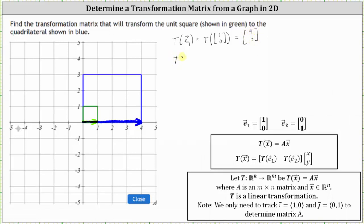Now let's find the transformation of the vector E sub two, which is the transformation of the vector (0, 1). Notice the vector (0, 1) forms the side of the unit square along the y-axis. The transformation of this vector is the vector that forms the corresponding side of the blue quadrilateral, which is this longer vector along the y-axis, the vector (0, 3). The transformation of the vector (0, 1) is the vector (0, 3).